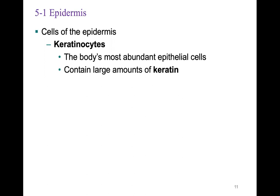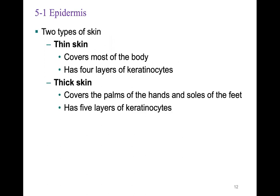The cells of the epidermis include keratinocytes, the body's most abundant epithelial cells, which contain large amounts of keratin. There are two types of skin: thin skin and thick skin. Most of the body is covered by thin skin, which has four layers of keratinocytes. Thick skin covers the palms of the hands and soles of the feet and has five layers of keratinocytes, providing more durability in areas that experience a lot of friction.